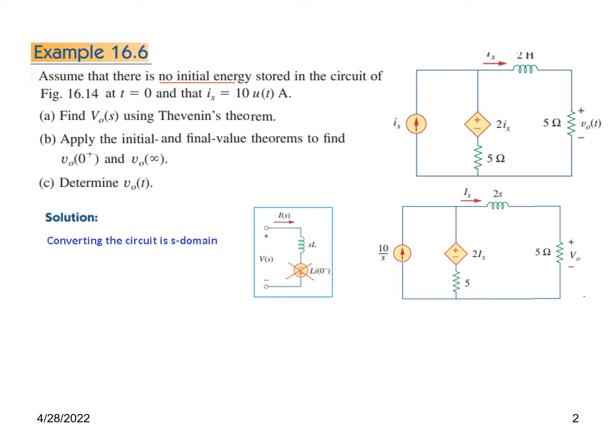Generally, we convert the inductor into the S-domain. Since the initial energy is zero, the initial energy terms cancel. The inductor becomes 2s. The source 10u(t) becomes 10/s in the S-domain.